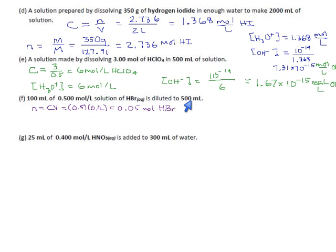If we start with 100 ml of 0.5 mole per liter HBr, the thing that will not change is the number of moles in it. N equals CV is 0.5 times 0.1 liters equals 0.05 moles of HBr. That amount is not going to go up or down. It used to be in 100 mils of water, now it's going to be in 500 mils of water.